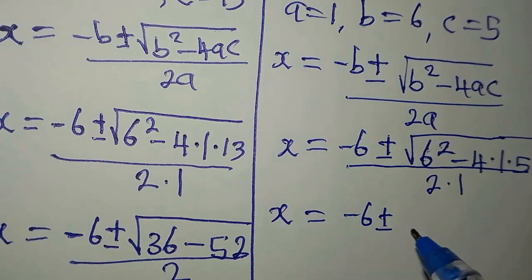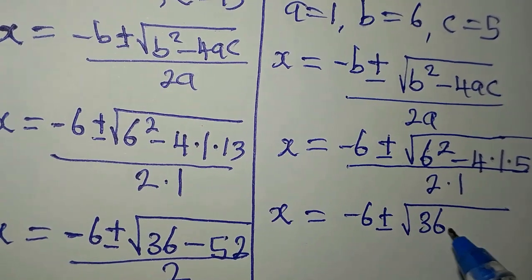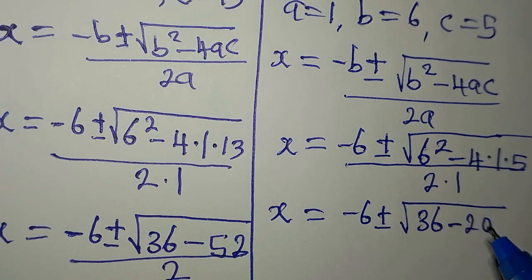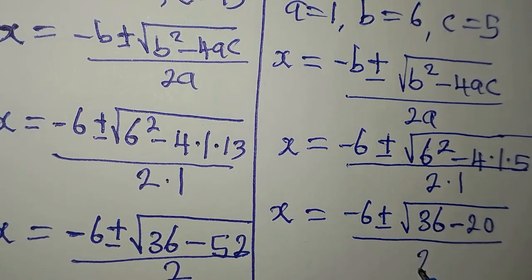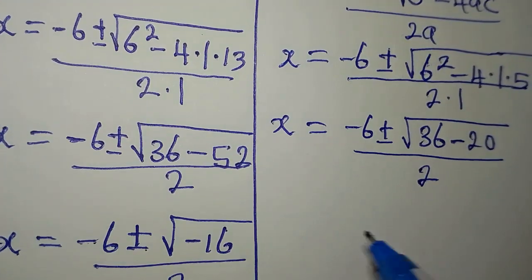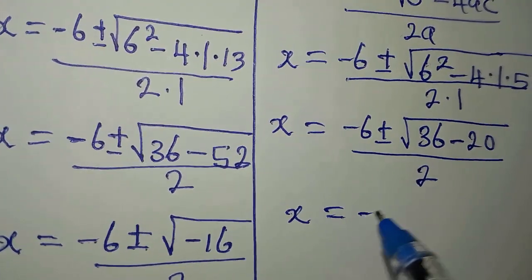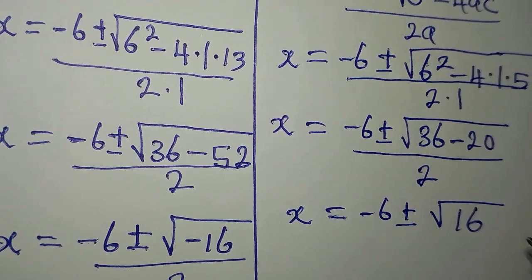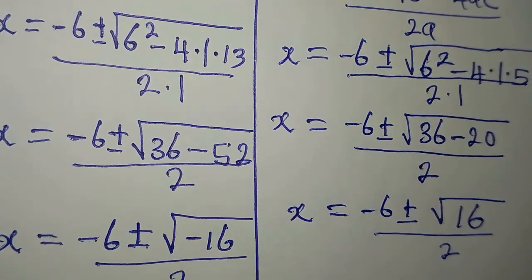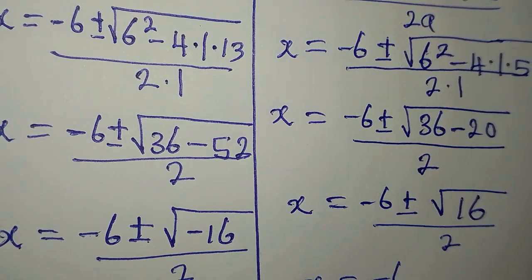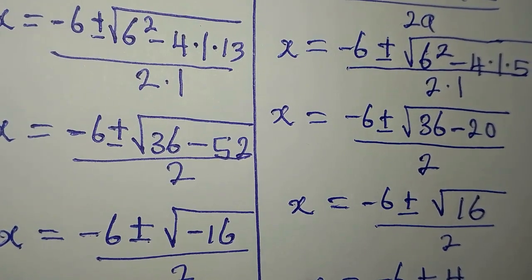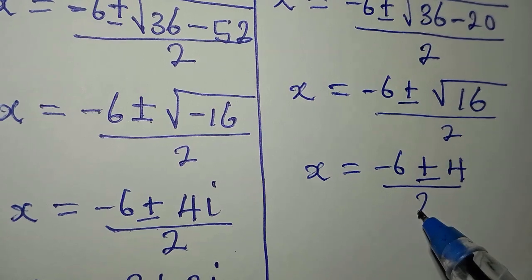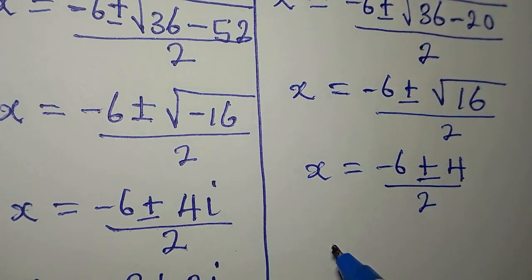Now x is minus 6 plus or minus: 6 squared is 36, minus 20, so we have 36 minus 20, and then we divide by 2. Continuing: x will be minus 6 plus or minus — the square root of 16 is 4 — so plus or minus 4, then we divide by 2.